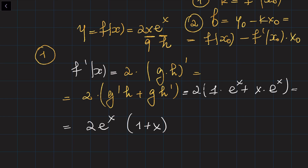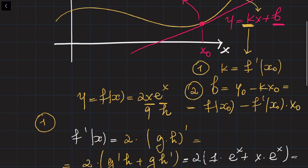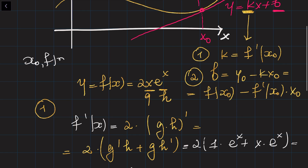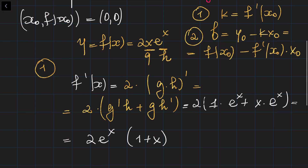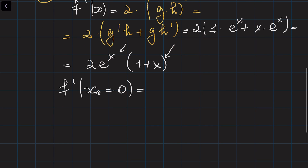What we need to do is evaluate the derivative at the point x0. Our point x0, y0 is given as 0 and 0. So we need to evaluate the derivative at x0 equals 0. Plugging in 0 for all appearances of x, it's going to be 2 times e to the 0 times (1 plus 0), which equals 2. So the slope of the tangent line to this curve at this point is equal to 2.